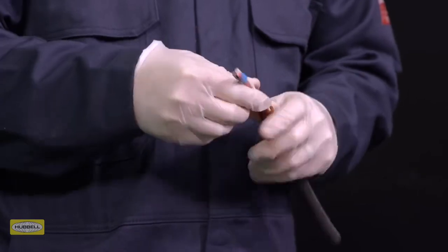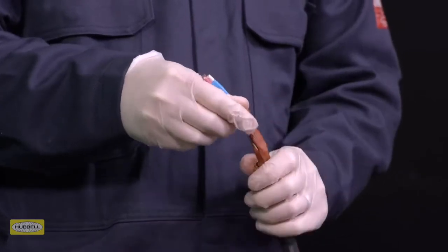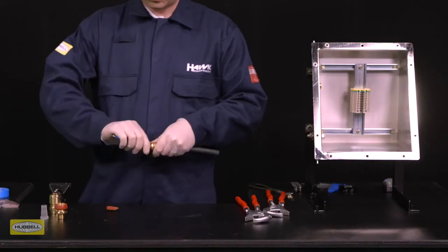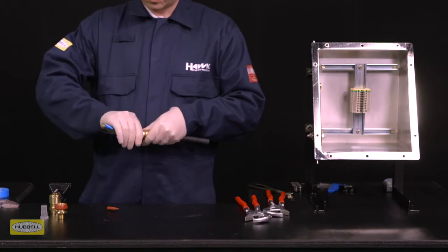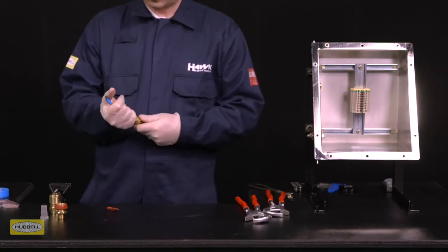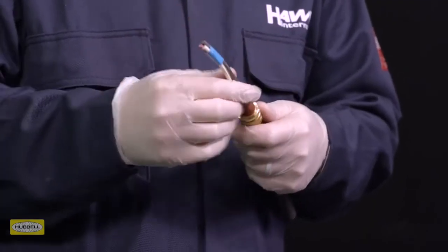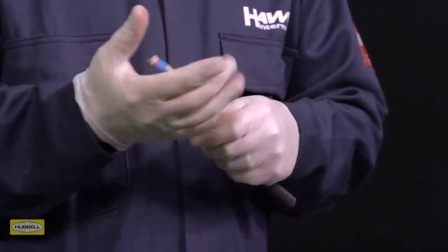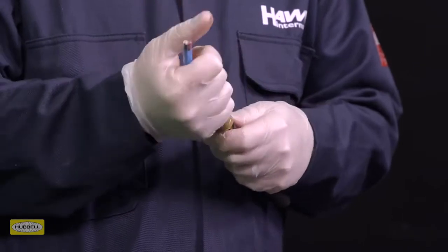Pack more compound around the outside of the conductors. Shape the compound using the palm of your hand. Tip: The compound should form a cone shape to aid installation and reduce the risk of voids during pot installation.